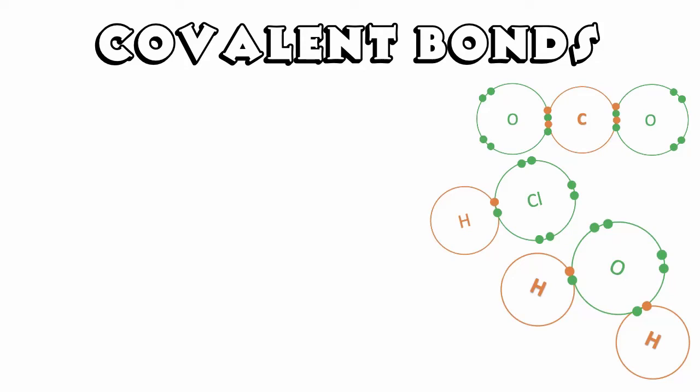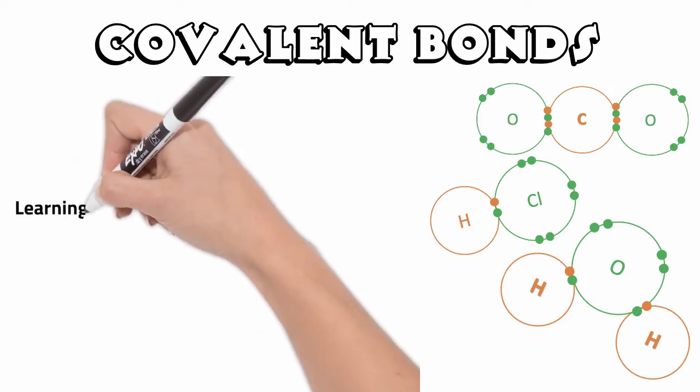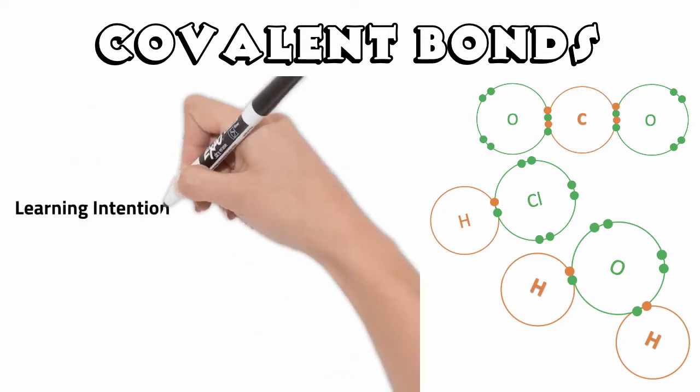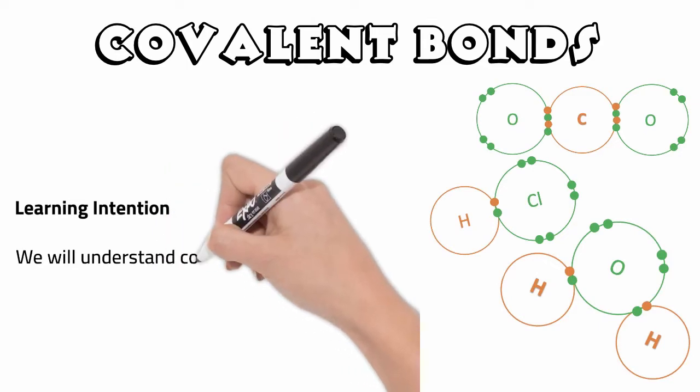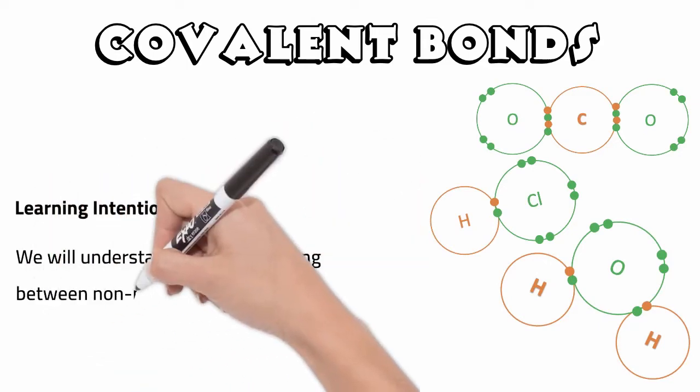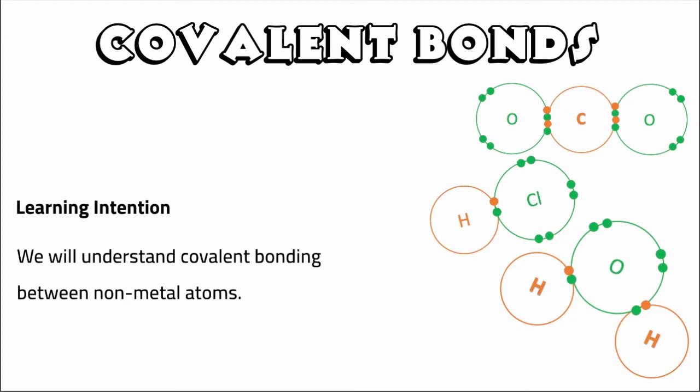In the last video we saw that ionic bonds form between metal and non-metal atoms by transferring electrons to form what we call ions or charged particles. In today's video we're going to be looking at covalent bonds and learning about how they form, what types of atoms they form between, and also looking at the strength of those bonds and what affects the bond strength when it comes to covalent bonding.